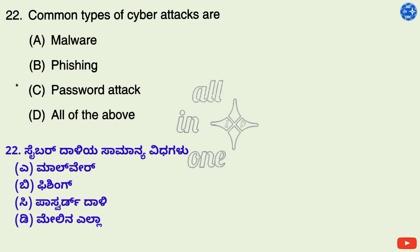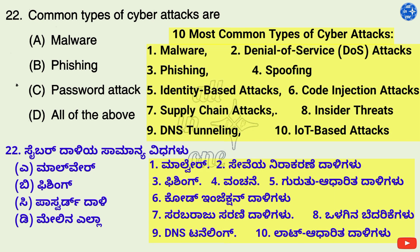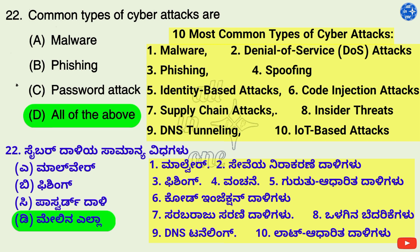Question 22. Common types of cyber attacks are — Options: A. Malware, B. Phishing, C. Password attack, D. All of the above. The 10 most common types of cyber attacks are: Malware, Denial of service attacks, Phishing, Spoofing, Identity-based attacks, Code injection attacks, Supply chain attacks, Insider threats, DNS tunneling, and IoT-based attacks. Therefore, right option is D: All of the above.